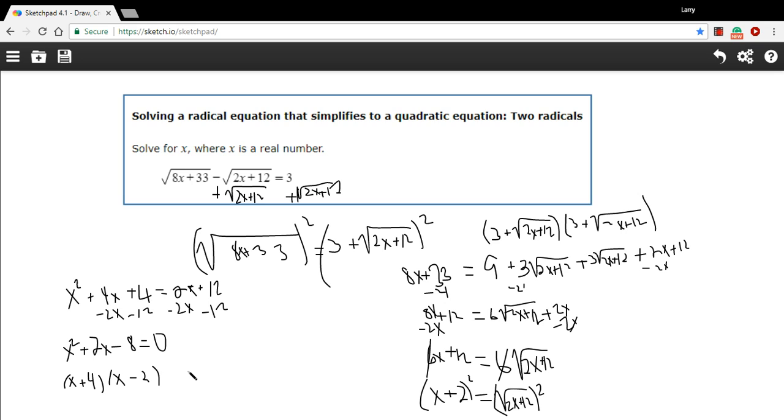Then, we'd set each of these equal to 0 and solve them. So, our potential solutions are going to be x equals negative 4 and x equals 2. But remember, we've just squared twice here. Even if you square only once, you've got to check these to make sure they're not extraneous solutions, see whether they work in this original equation or not. So, I'm going to take these numbers and put them back in.